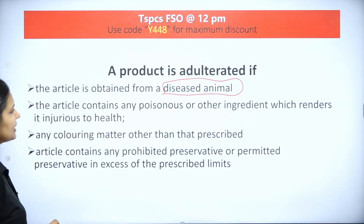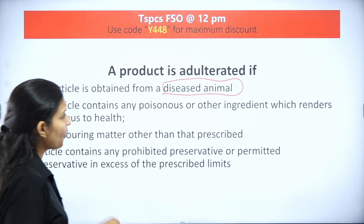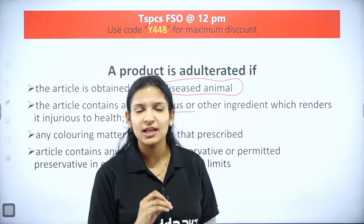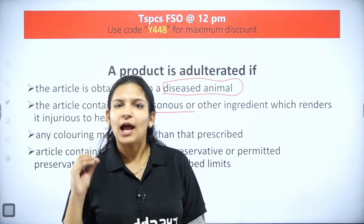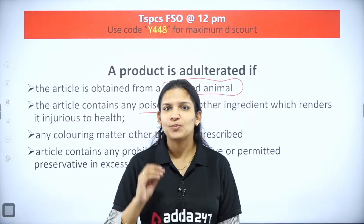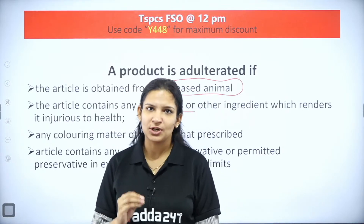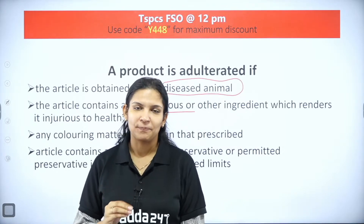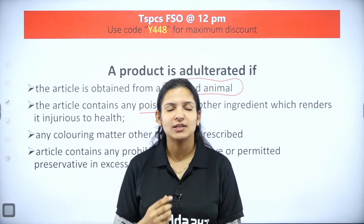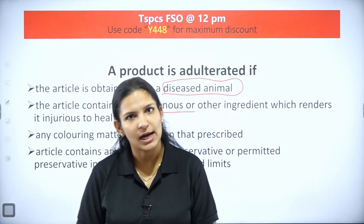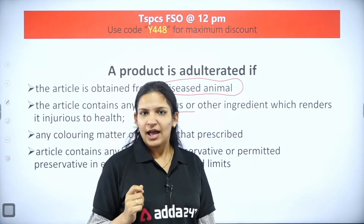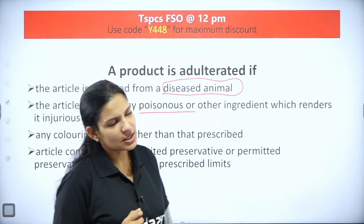The next condition is if the article contains any poisonous substance or any kind of toxin - either produced by contaminants or naturally produced in the food. If it contains any poisonous or toxic substance, it comes into adulteration because it will hamper the health of the consumer.